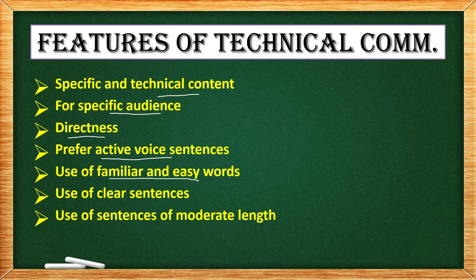Use of familiar and easy words — simple vocabulary so that it will be easy for the receiver to understand. Use of clear sentences — sentences should be completely clear and complete. There is a proper way; bring that system into your technical documents. Use of sentences of moderate length — the length should be moderate. You should not write very long sentences that are difficult for the reader or receiver to understand. The ultimate purpose of communication is to convey the information or message properly to the receiver so that they are able to understand it.